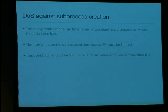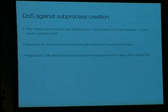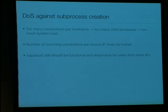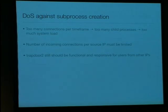The more interesting stuff — credits for this go to Clifford, who developed it. It's quite simple and quite effective. The basic problem is that when you have too many connections per time frame it leads to too many child processes — one connection leads to two child processes, so that's quite a lot of resources and too much system load. You need to limit the incoming connections per source IP plus the total number of incoming connections, while Trapdoor 2 should still be functional and responsive for users from other IP addresses.